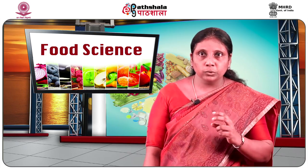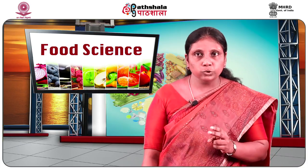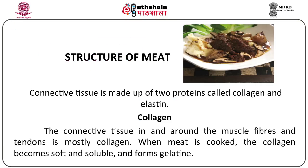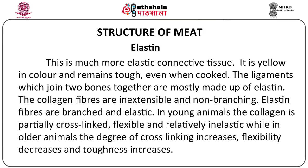The connective tissue contains two important proteins: collagen and elastin, which determine the cooking quality of meat. Collagen is found in and around the muscle fibers and in the tendons. When meat is cooked, collagen becomes soft and soluble and forms gelatin. Elastin is found in large amounts in the elastic connective tissue; it is yellow in color and remains tough even when cooked. The ligaments which join two bones together are mostly made up of elastin. Collagen fibers are inextensible and non-branching, whereas elastin fibers are highly branched and elastic.